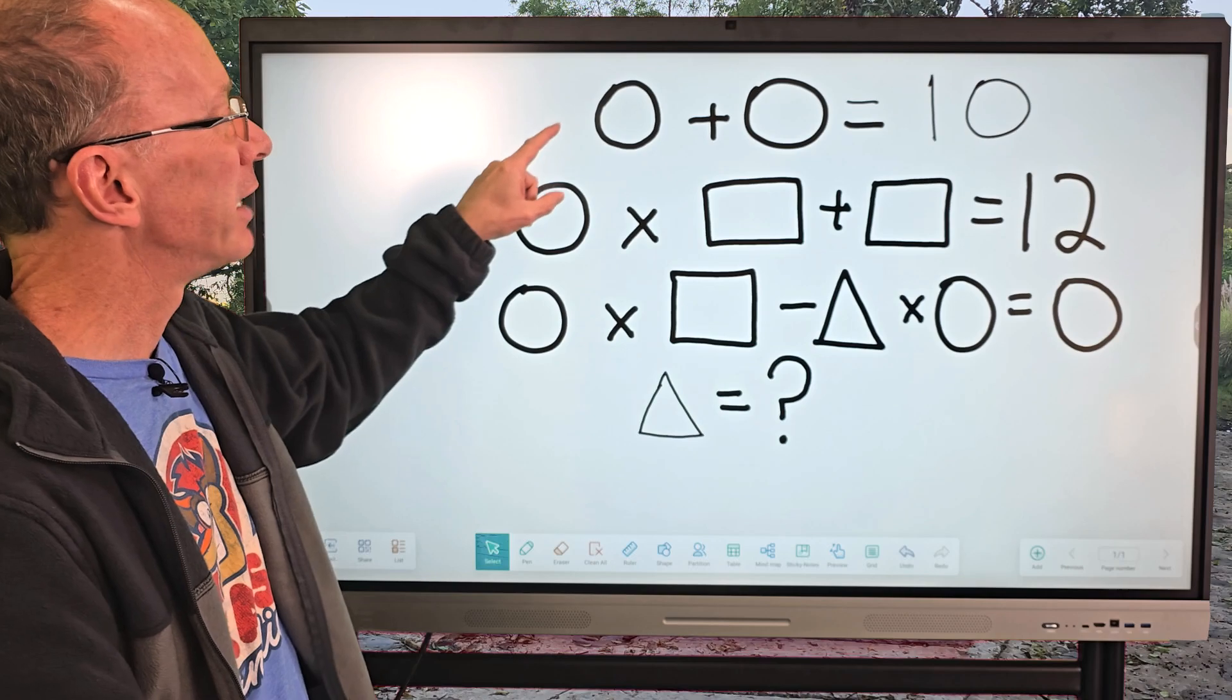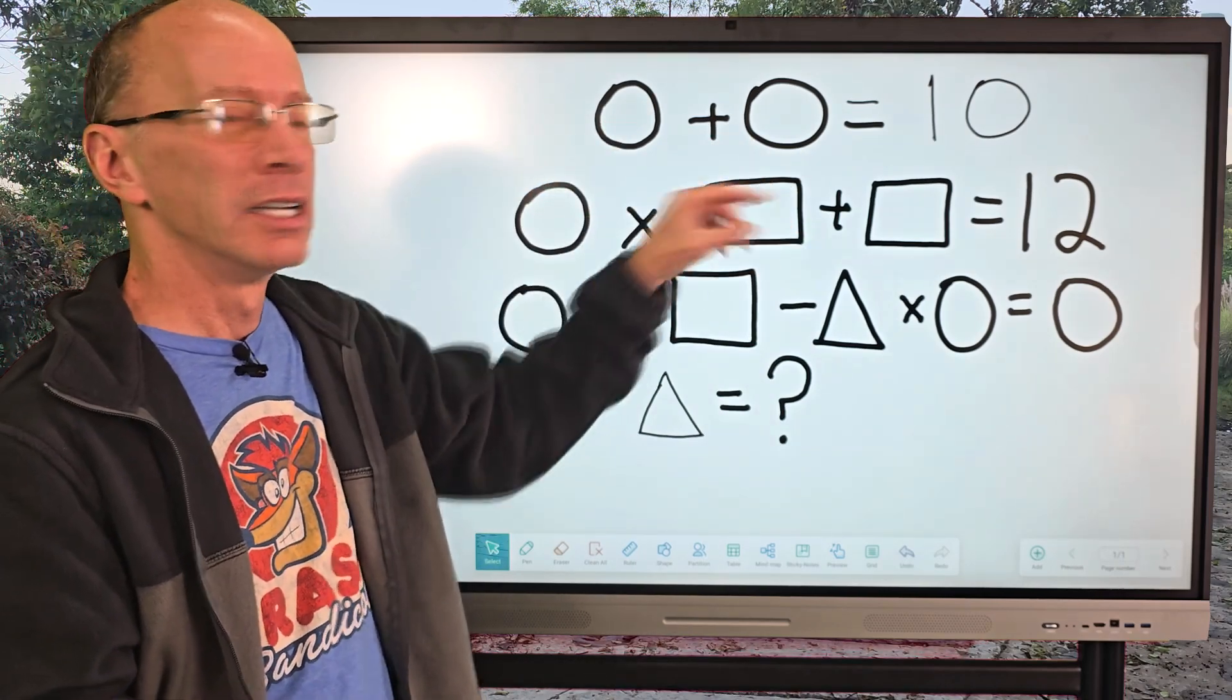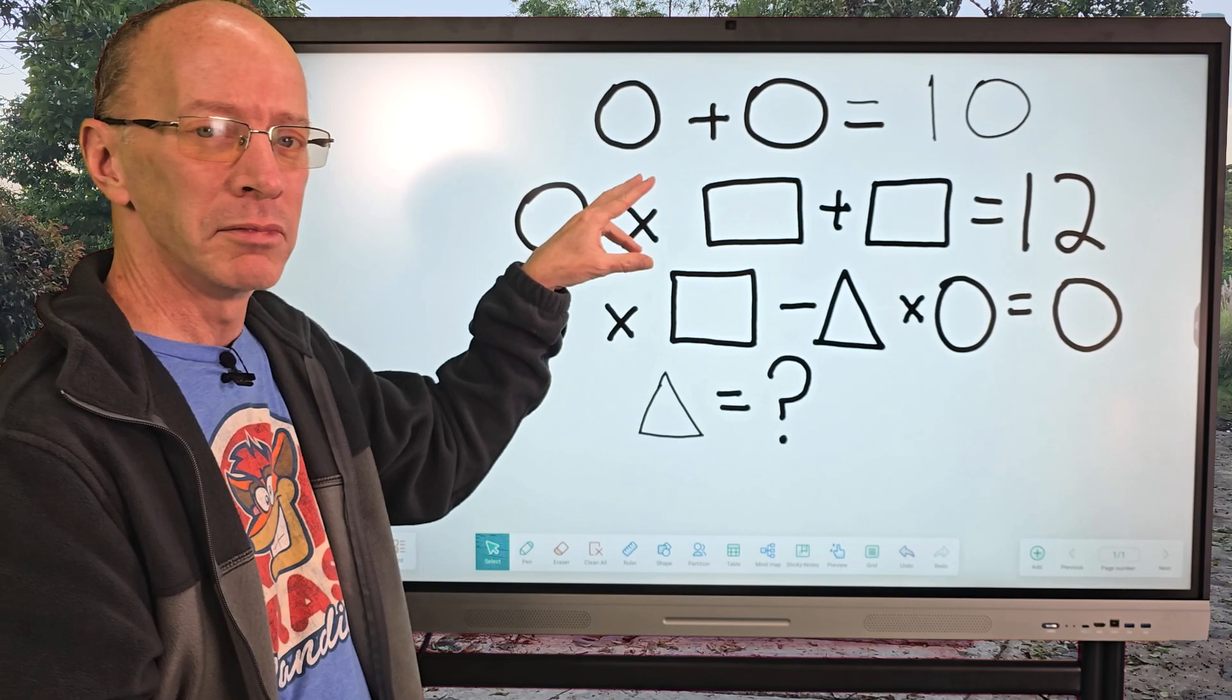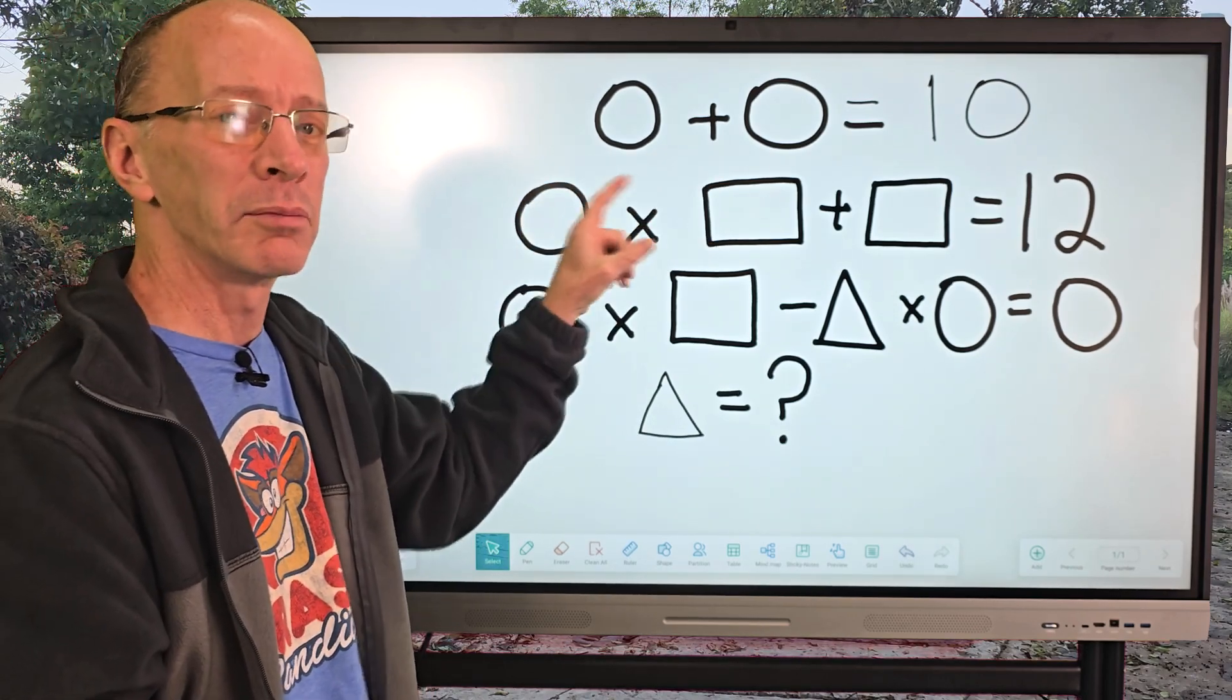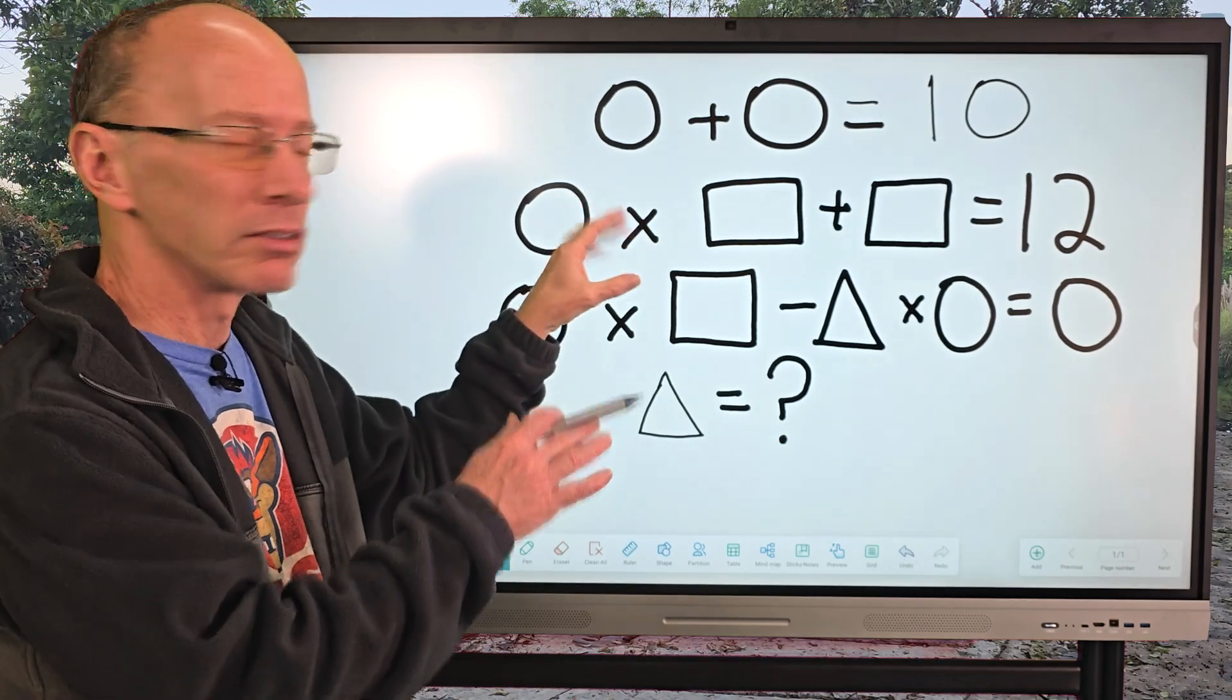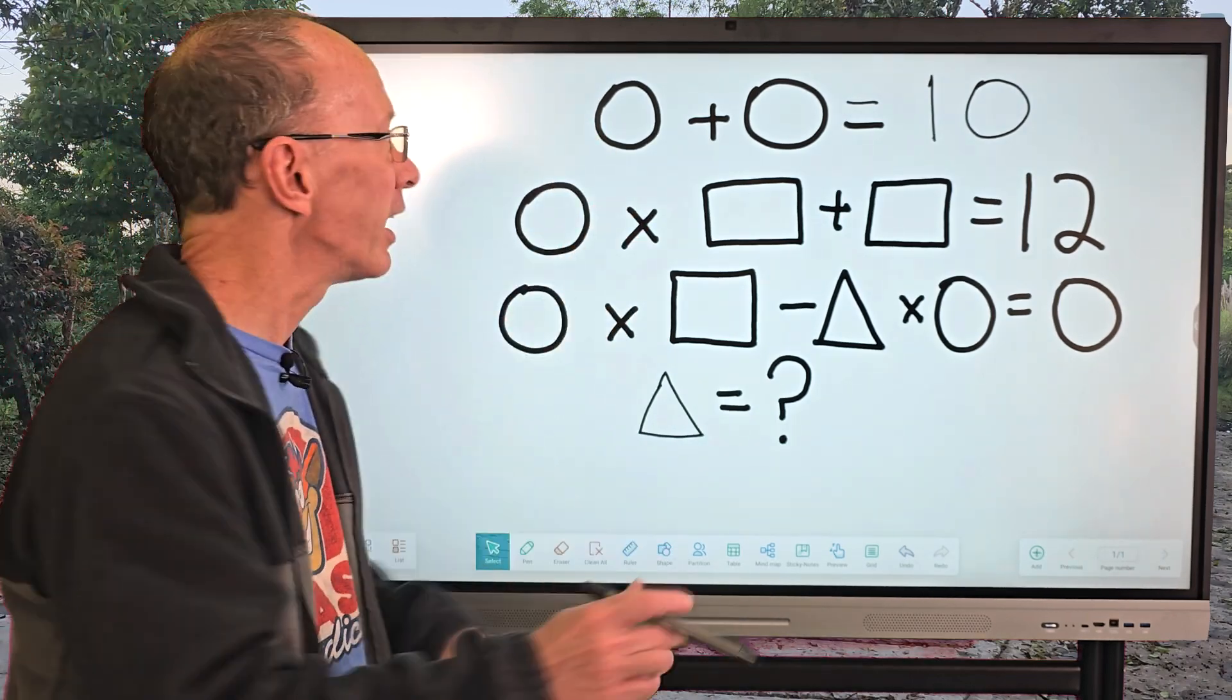All right. We have a circle plus a circle equals 10. So two shapes that have the same value would be 10 divided by two. That's how I would figure it out. So the circles would be five.